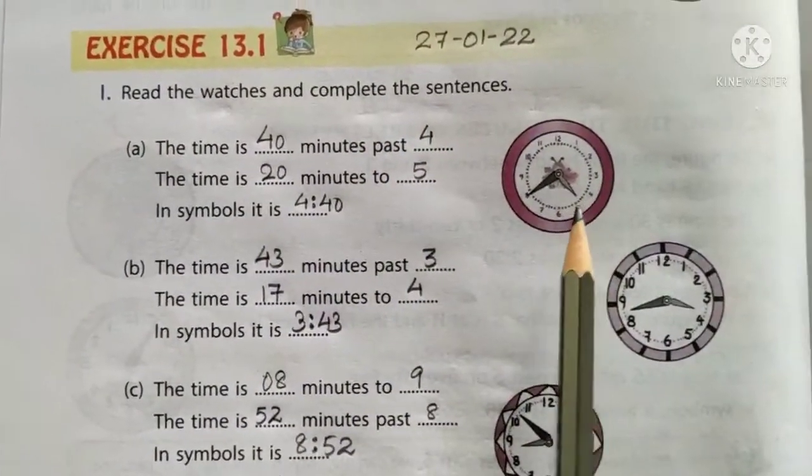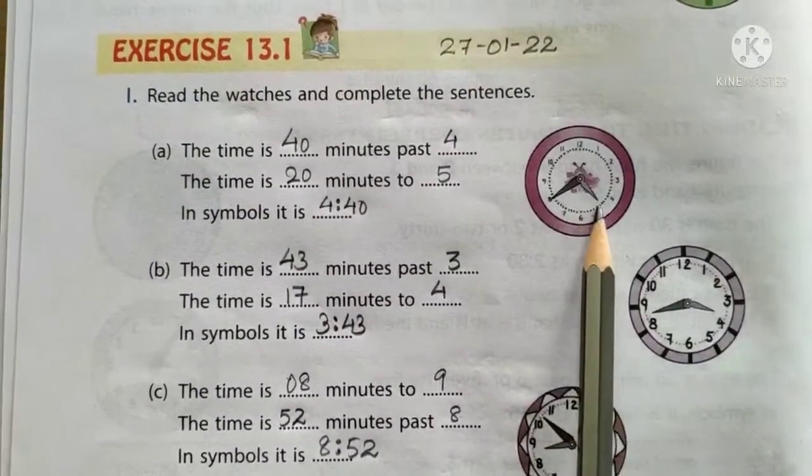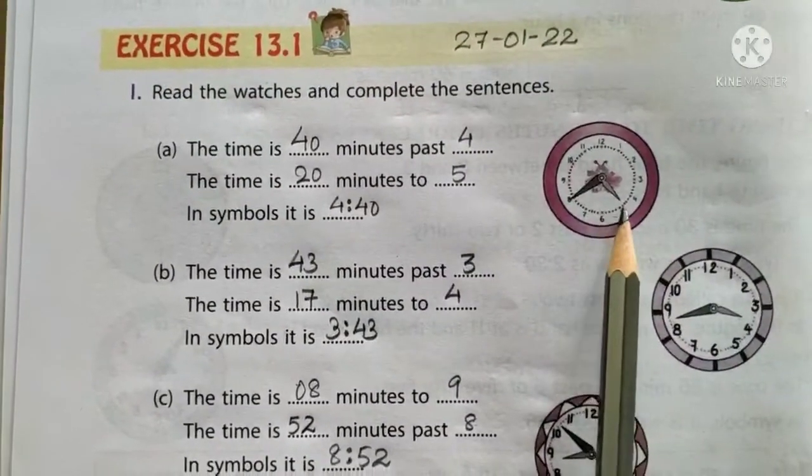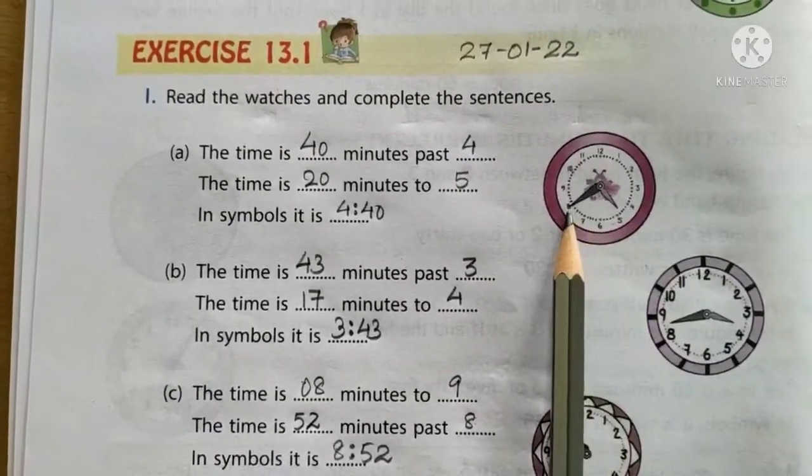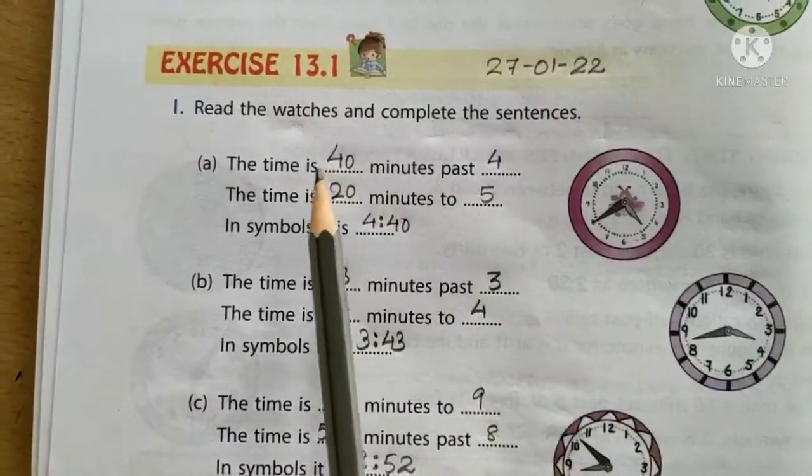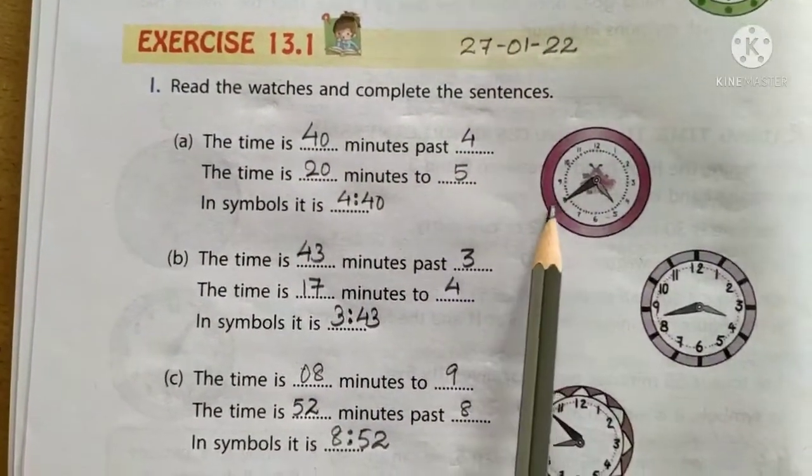Here the watch is given. We have to read the time by looking at the minute hand and the hour hand. In this watch, the hour hand is between 4 and 5, the minute hand is at 8, so the time is 40 minutes past 4, because 8 fives are 40.